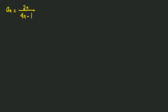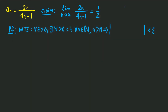For 2n over 4n minus 1, we can use our previously learned calculus techniques to find the limit as n goes to infinity. Since it's just a single power polynomial over a single power polynomial, we can just divide the 2 by the 4 to get one half.